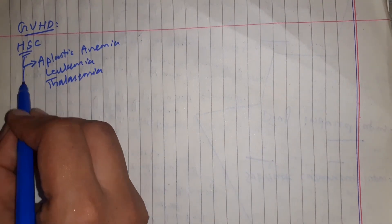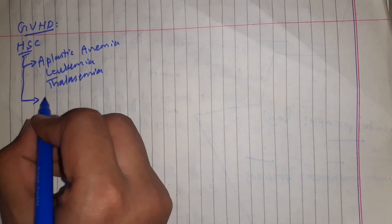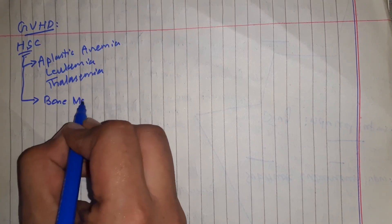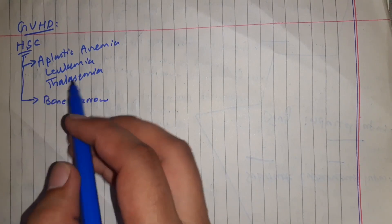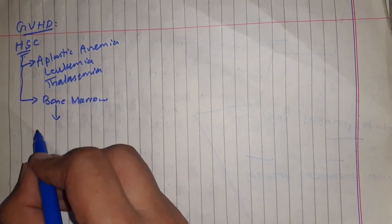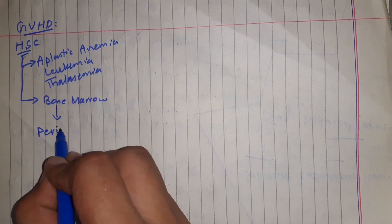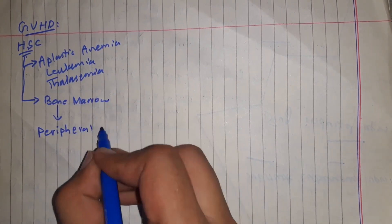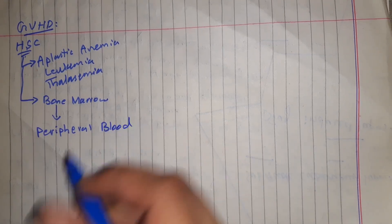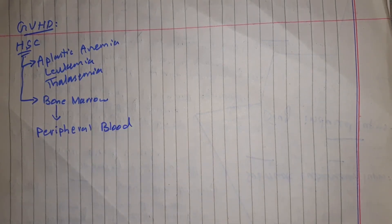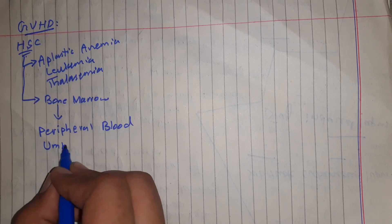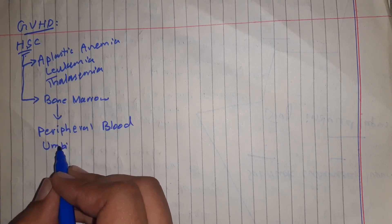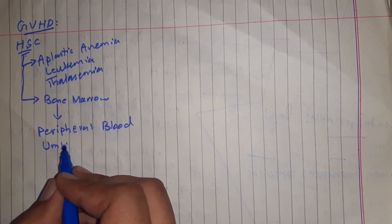These hematopoietic stem cells were previously derived from the bone marrow, but nowadays hematopoietic stem cell growth factors are used, allowing these cells to be cultured from the peripheral blood. They can also be obtained from the umbilical cord, which is a rich source of hematopoietic stem cells.